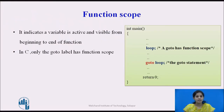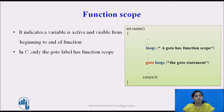Now we see the function scope. Function scope indicates that a variable is active and visible from the beginning to the end of the function. In C, only the goto label has a function scope, meaning it is applicable only with goto label names. This means there should not be the same label name inside a function, as demonstrated in an example where the label 'loop' is visible throughout the main function.